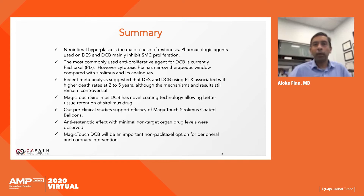In summary, neointimal hyperplasia is the main cause of restenosis. Pharmacologic agents used in DCBs and DES mainly inhibit smooth muscle cell proliferation. The most common antiproliferative agent for DCBs is currently paclitaxel; however, it has a narrow therapeutic window and there are safety questions at two and five years per the Katsanos meta-analysis. The Magic Touch sirolimus DCB has a novel coating technology allowing better tissue retention, and preclinical studies support its efficacy with minimal non-target organ drug levels. It is emerging as an important non-paclitaxel option.